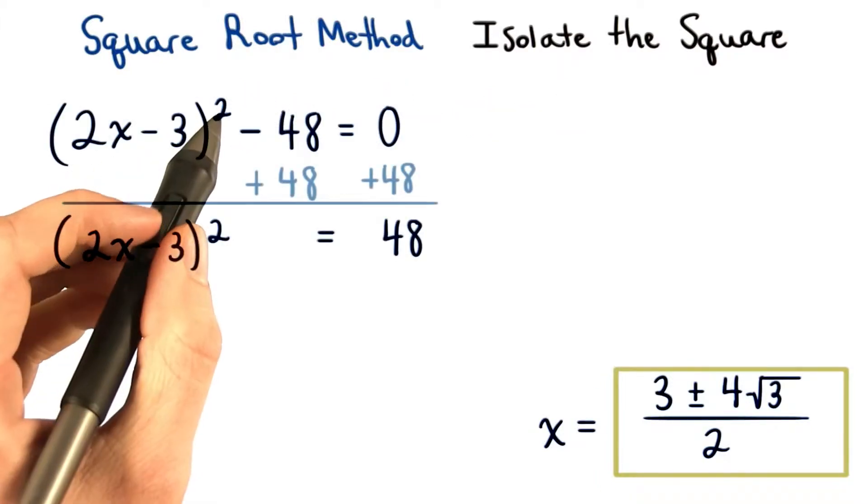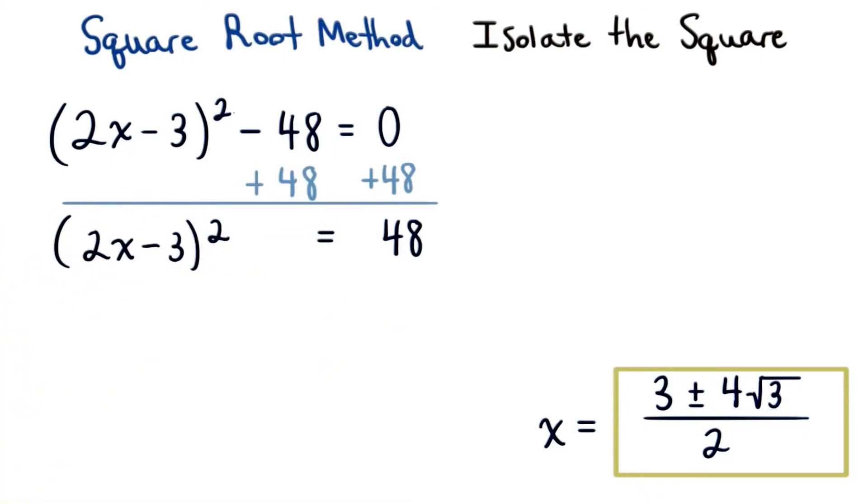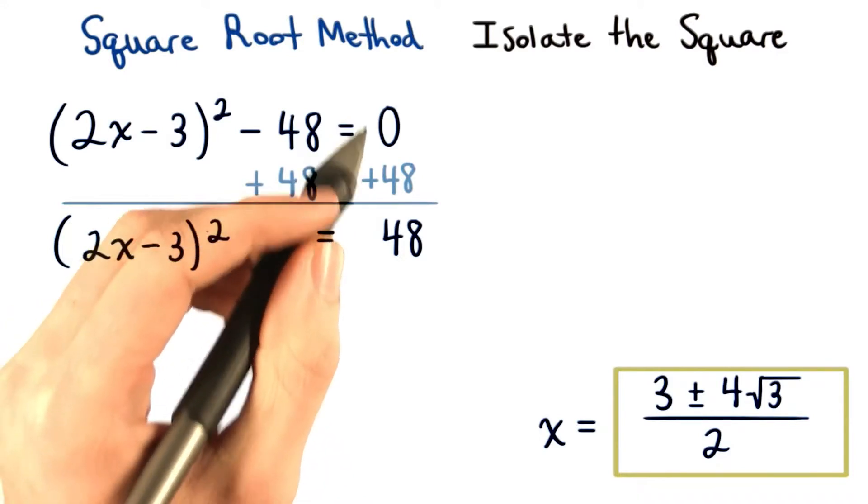First, we want to isolate the square by adding 48 to both sides of our equation. So we'll keep the squared quantity on the left, and we'll have positive 48 on the right.